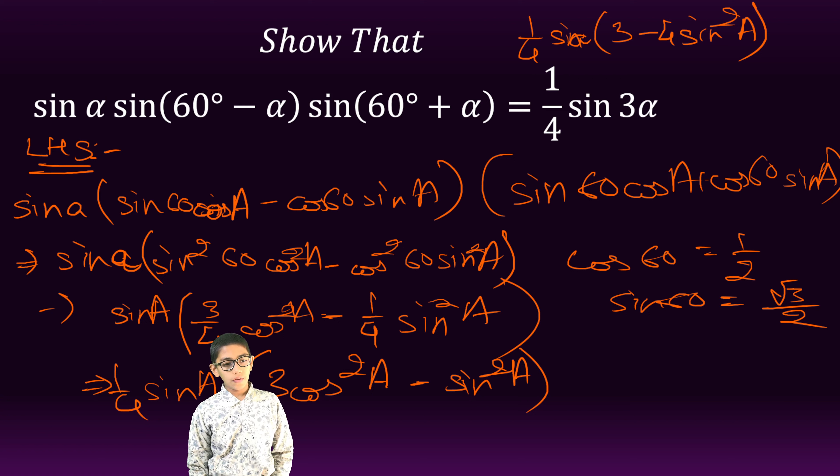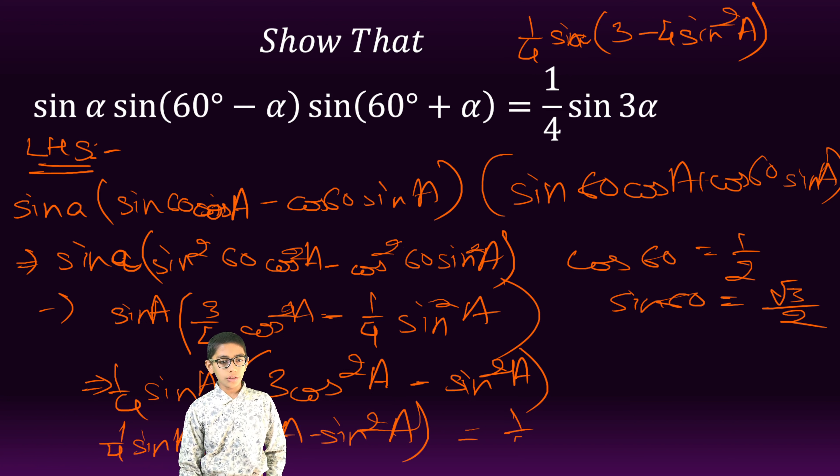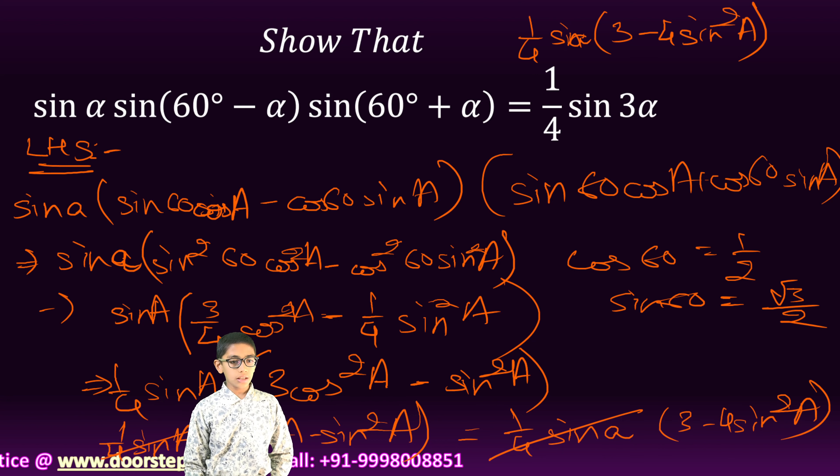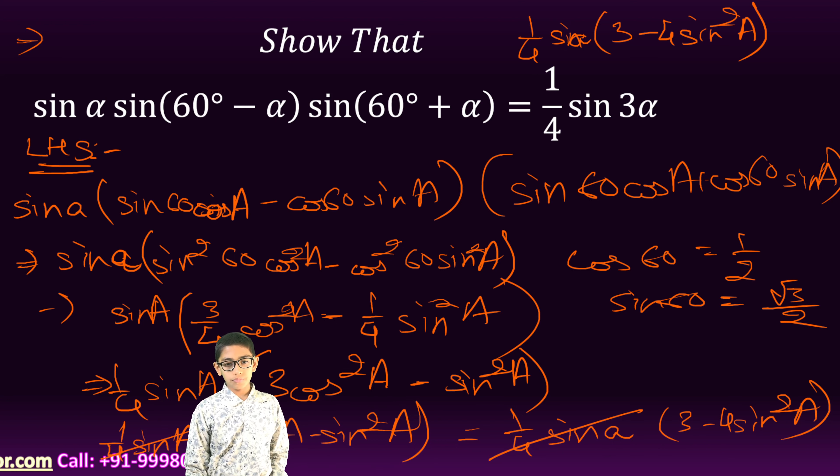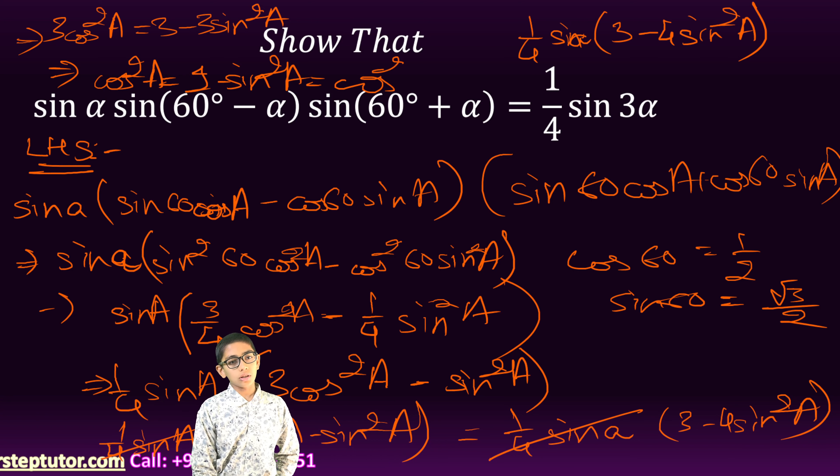We will have 1 upon 4 sin A into 3 cos square A minus sin square A is equal to 1 upon 4 sin A into 3 minus 4 sin square A. We can cancel this and then we will get 3 cos square A equals to 3 minus 3 sin square A. We can cancel 3, and we will get cos square A equals to 1 minus sin square A which equals cos square A.